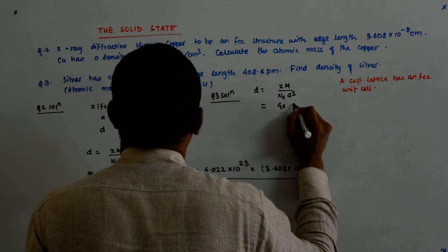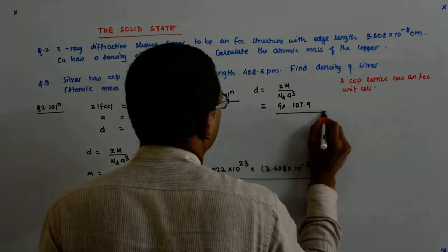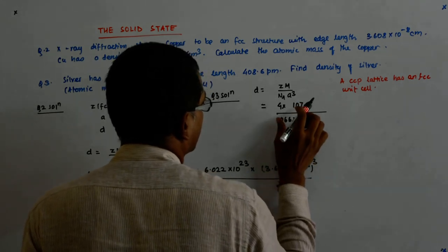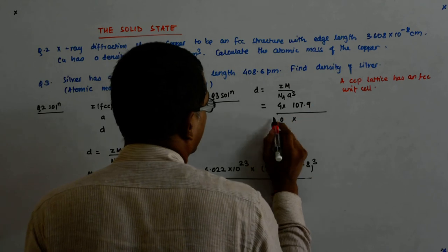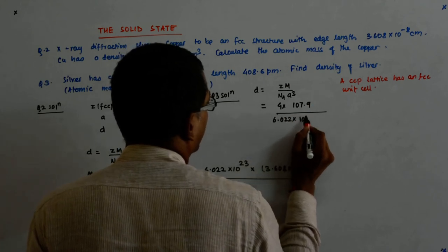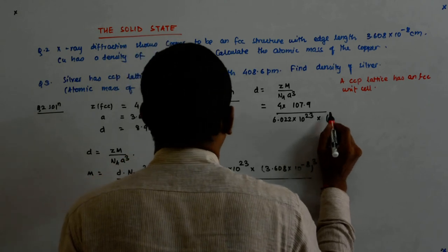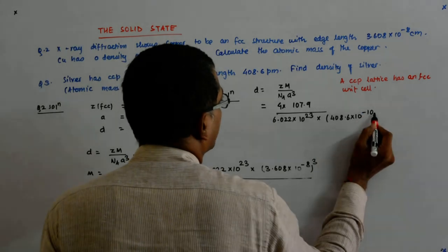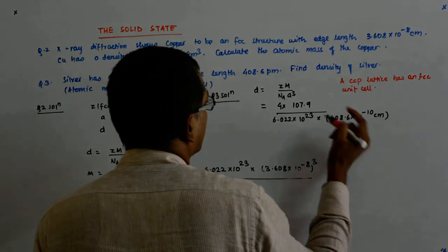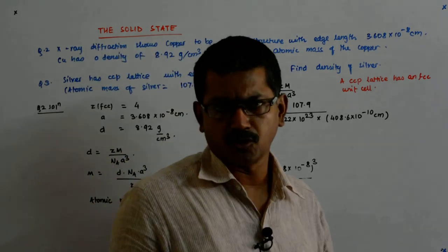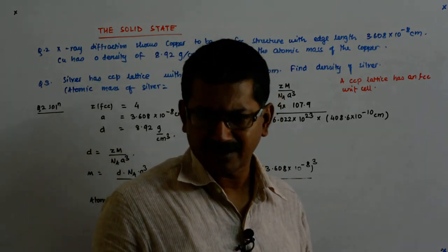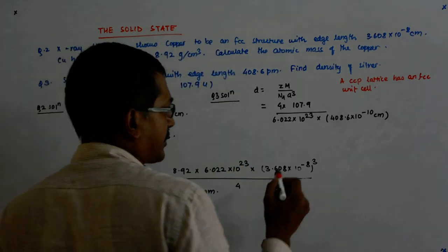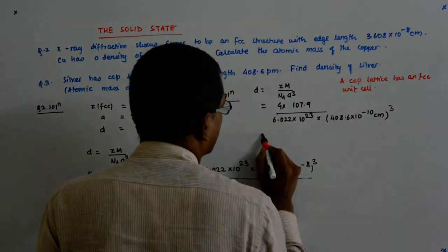4 into 107.9 divided by, sorry, sorry, sorry. 6.022 into 10 to the power 23 into 408.6 into 10 to the power minus 10. Because, with this picometer, it should have been 408.6 into 10 to the power minus 12 meters. I multiplied it by 100 to convert it into centimeters. So, you should also be wary of that.